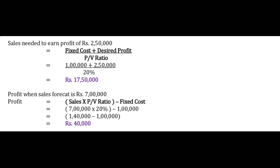The next requirement of the question is: if the company makes sales of ₹7,00,000, what profit does the company earn? The formula for Profit at a given level of sales is: Sales × PV Ratio minus Fixed Cost. Sales = ₹7 lakh, PV Ratio = 20%. So: ₹7,00,000 × 20% = ₹1,40,000 contribution. Subtracting Fixed Cost of ₹1,00,000, Profit = ₹40,000. So if the company makes sales of ₹7,00,000, it earns a profit of ₹40,000.